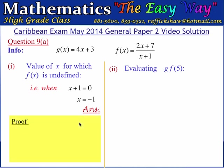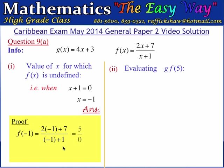To explain this further, let's look at f of minus 1. f of minus 1 equals 2 times minus 1 plus 7 divided by minus 1 plus 1. The numerator gives us minus 2 plus 7, which is 5. The denominator gives us negative 1 plus 1, which is 0. So this reduces to 5 divided by 0, which is undefined — a calculator would give an error, represented by the infinity sign. Therefore, f of minus 1 is undefined.